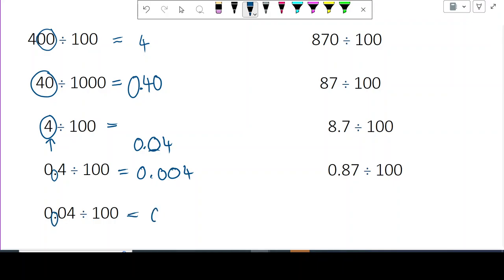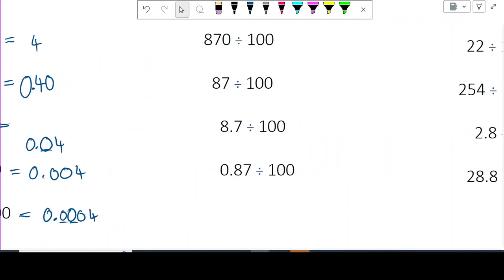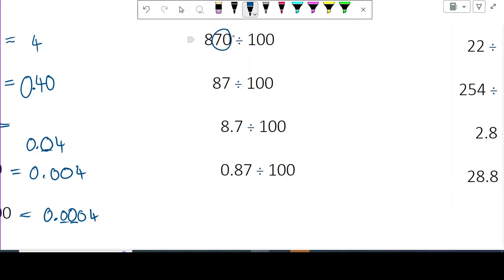There's the decimal. The 0 and the 4 are going to move two places creating two gaps between them and the decimal. 0.004. Those two digits will find themselves on the right of the decimal point. Those two digits will find themselves on the right of the decimal point.